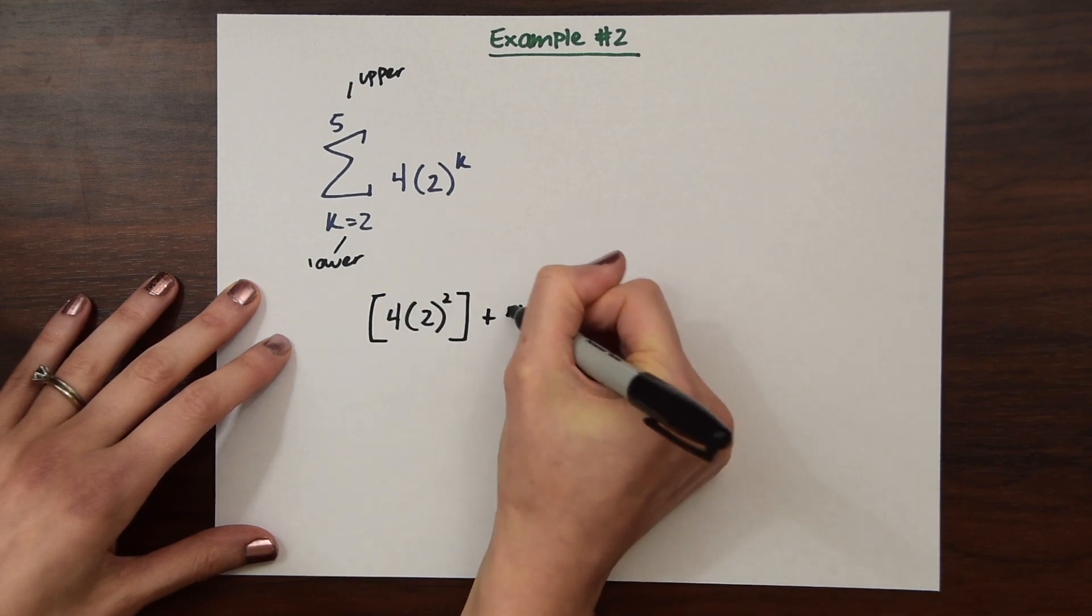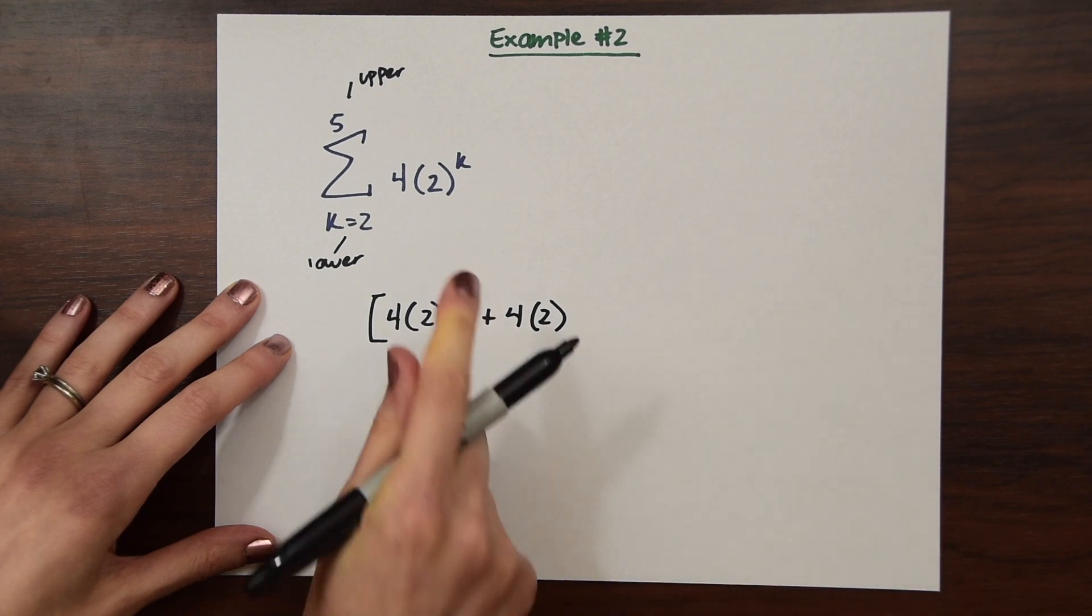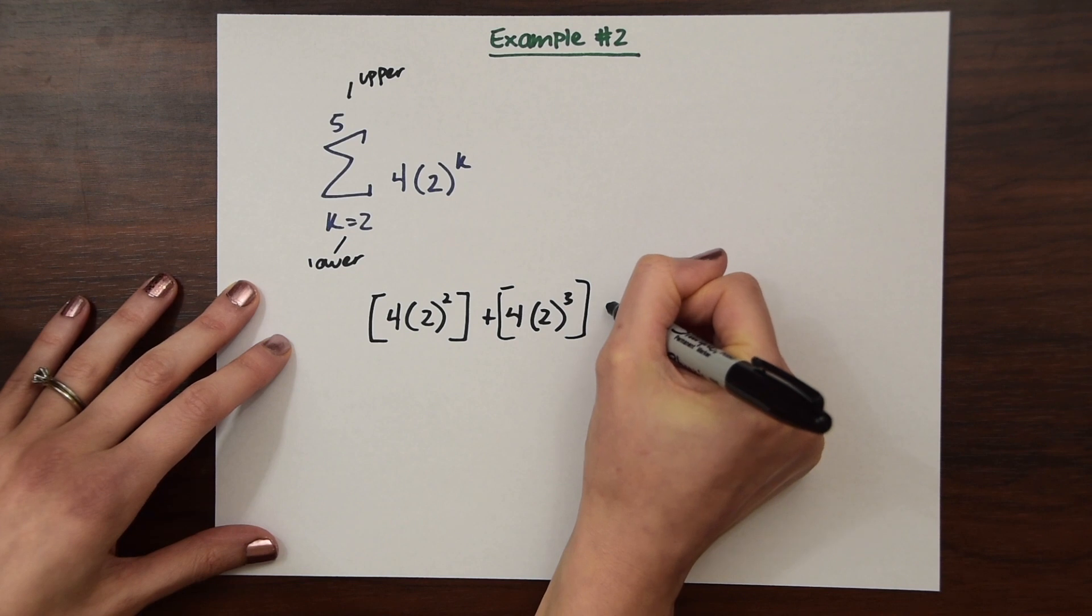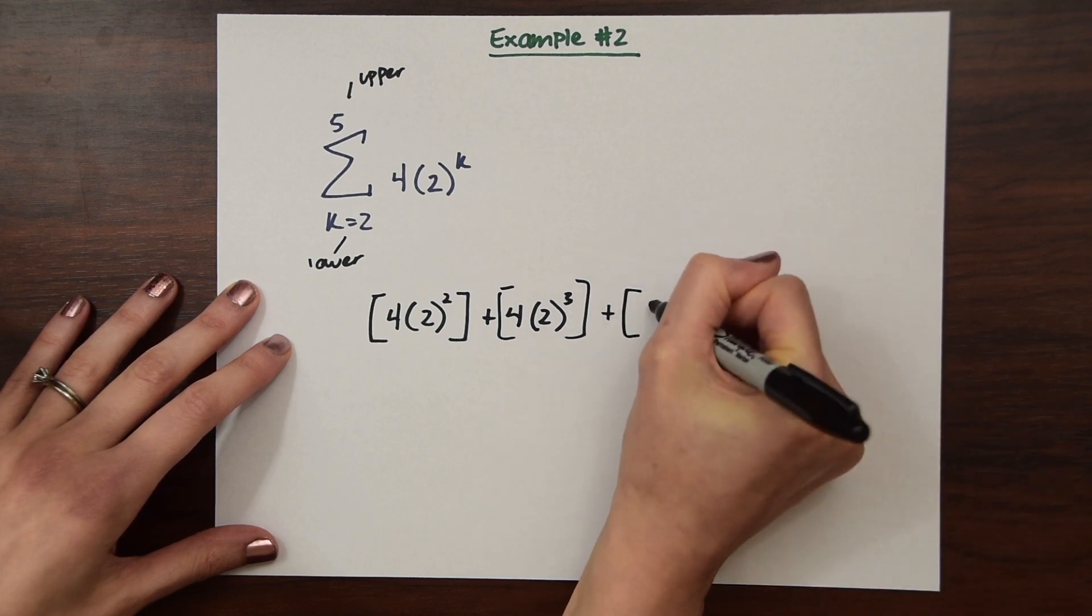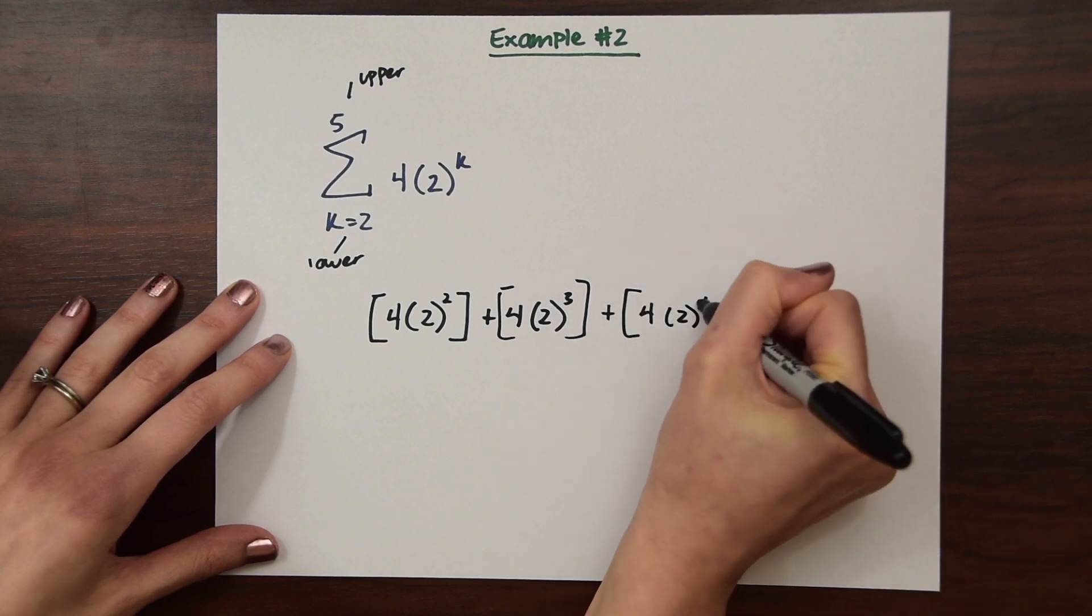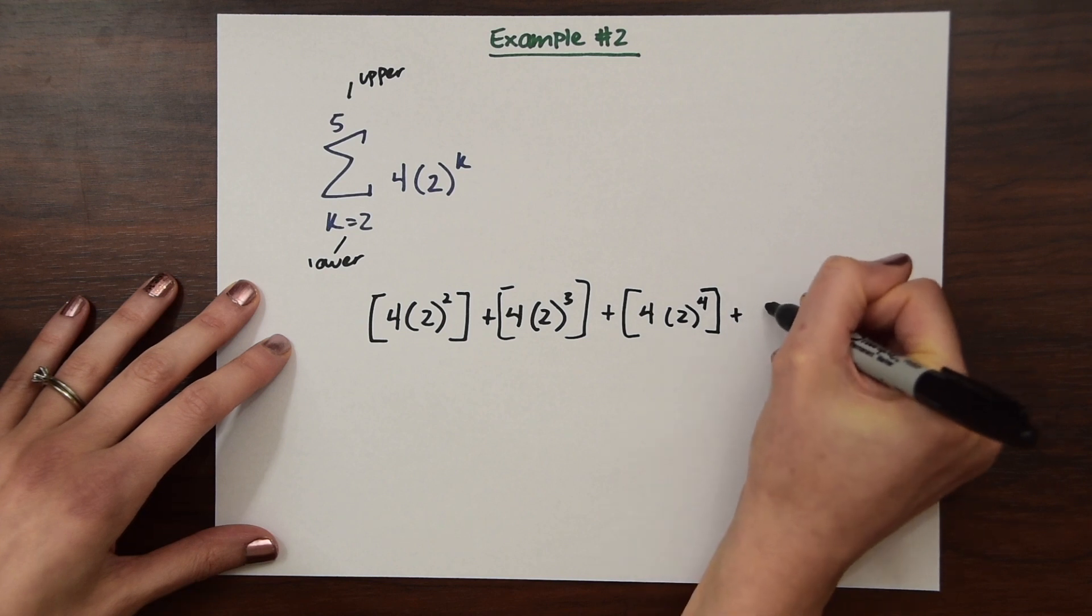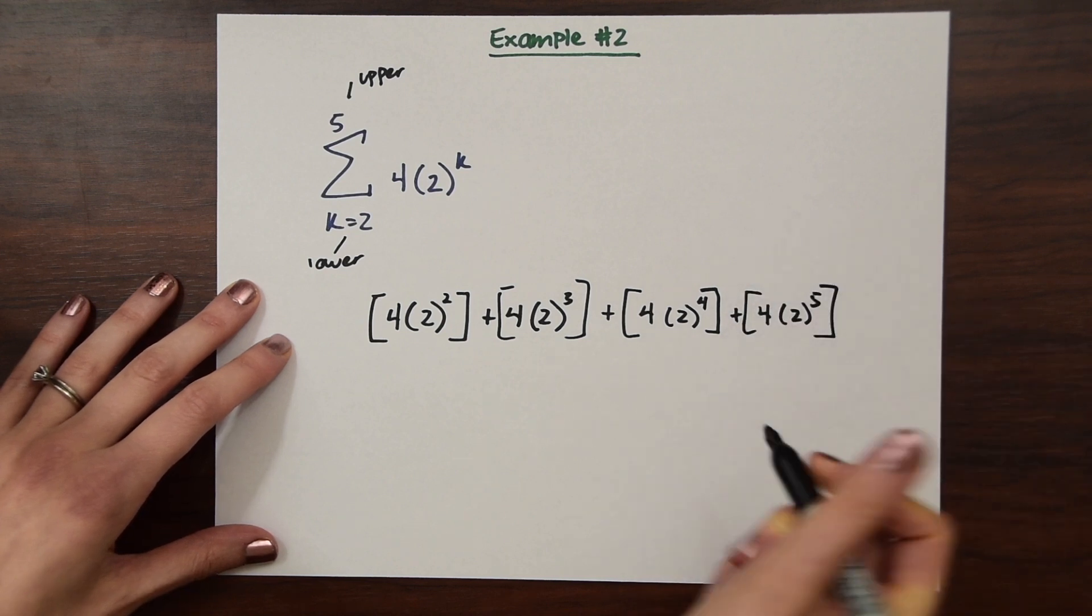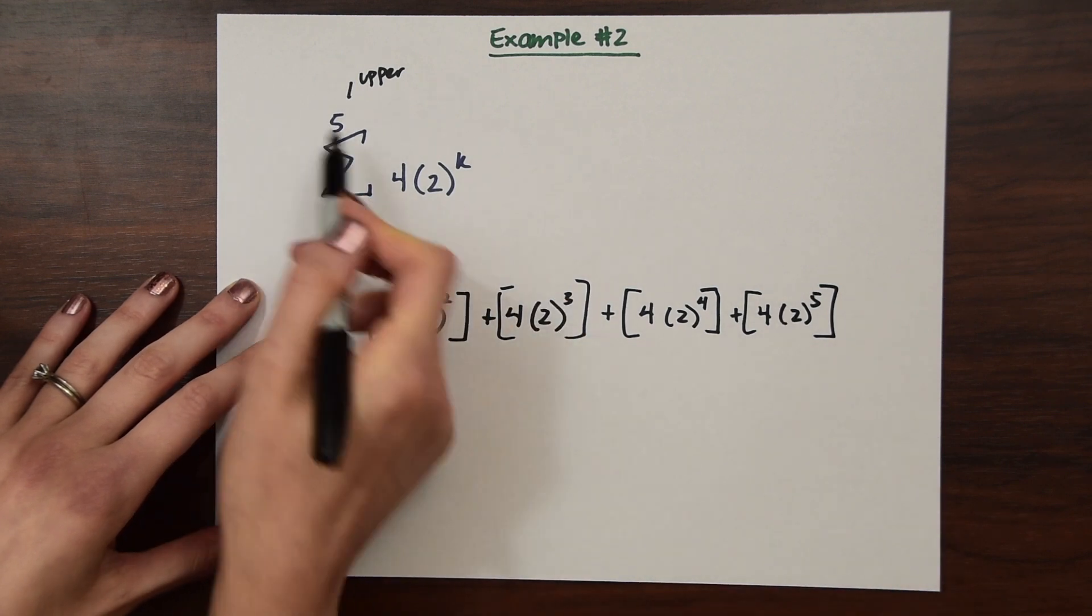And now for the next value of k, we're going to go to 3. So 4 times 2 raised to the third power, 4 times 2 raised to the fourth power, and plus 4 times 2 raised to the fifth power. So we stopped at 5 because that is where our upper limit is at.